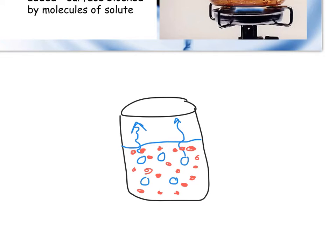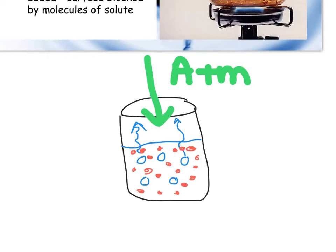Pushing down on everything is what we call atmospheric pressure, measured usually in ATMs or atmospheres. For something to be able to boil, it has to essentially overcome the force of atmospheric pressure. So if things are blocking the path and the water molecules are not able to push through because they are being blocked by the solute molecules, then what you're really going to see is that the boiling point is going to be elevated.